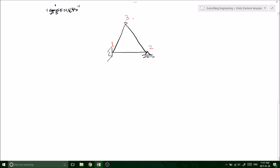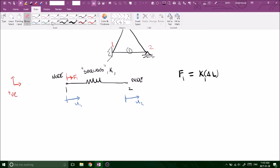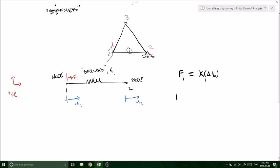So we want to consider isolate element 1 here. We've got our node, our spring, and our node 2. So we know that there's going to be a potential for displacement 1 and a potential for displacement 2. And also, is equal to K1 times delta L.